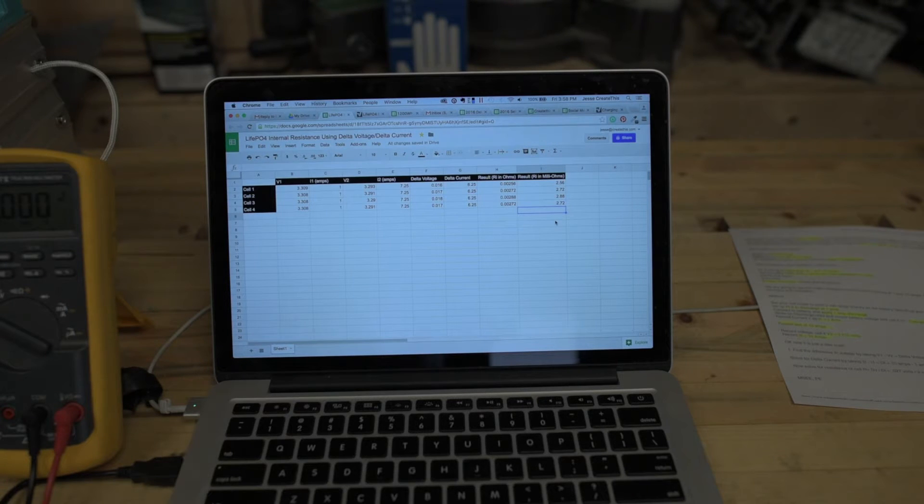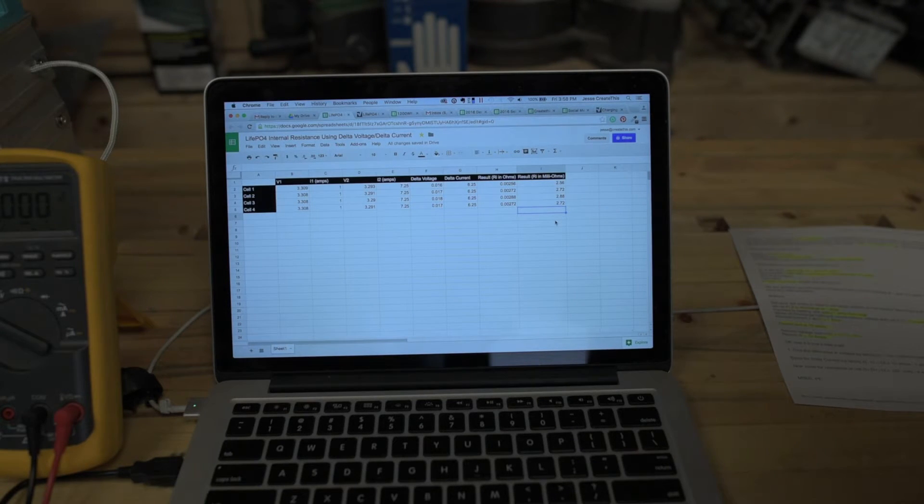So what I'm going to do is I'm going to remake my labels for each individual cell, and I'm going to list these milliohms RI ratings.